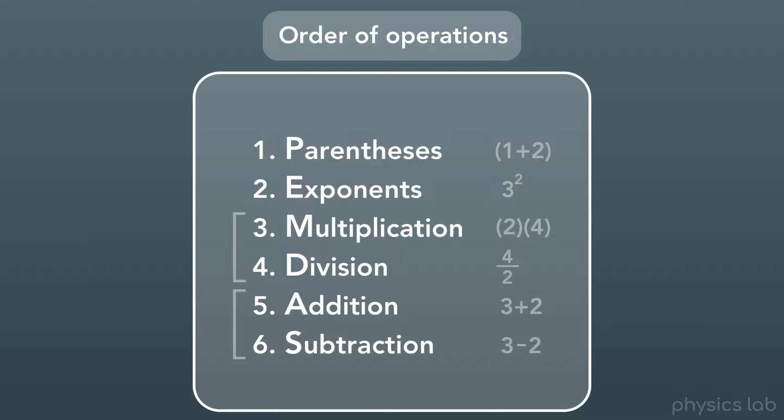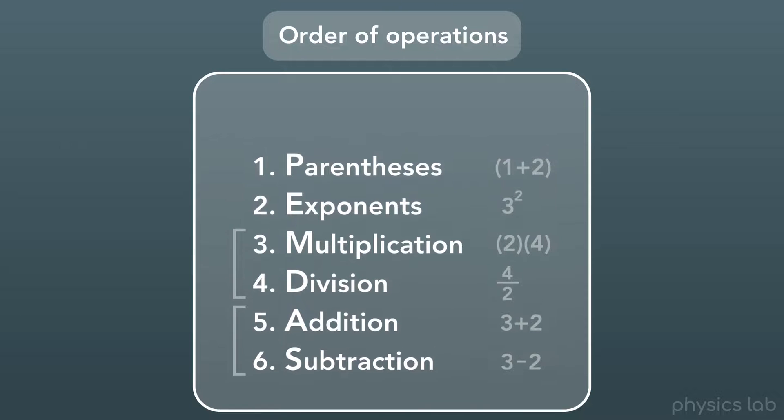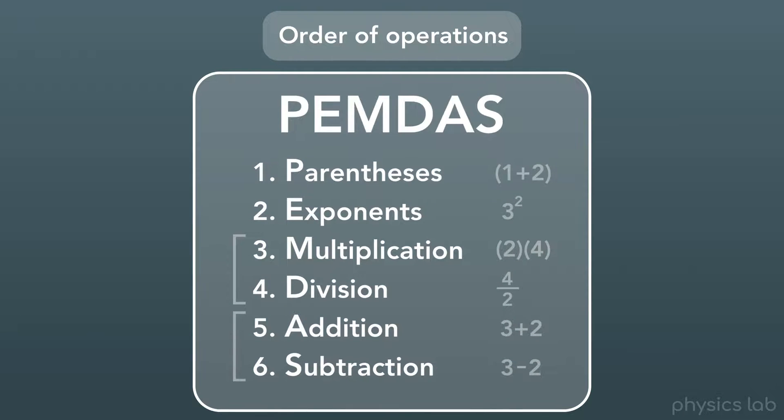We have these little brackets here because you can actually do multiplication and division at the same time, and you can do addition and subtraction at the same time. But multiplication and division have to come before addition and subtraction. And to memorize this order of operations, we usually use the word PEMDAS, which is the first letter of each operation.